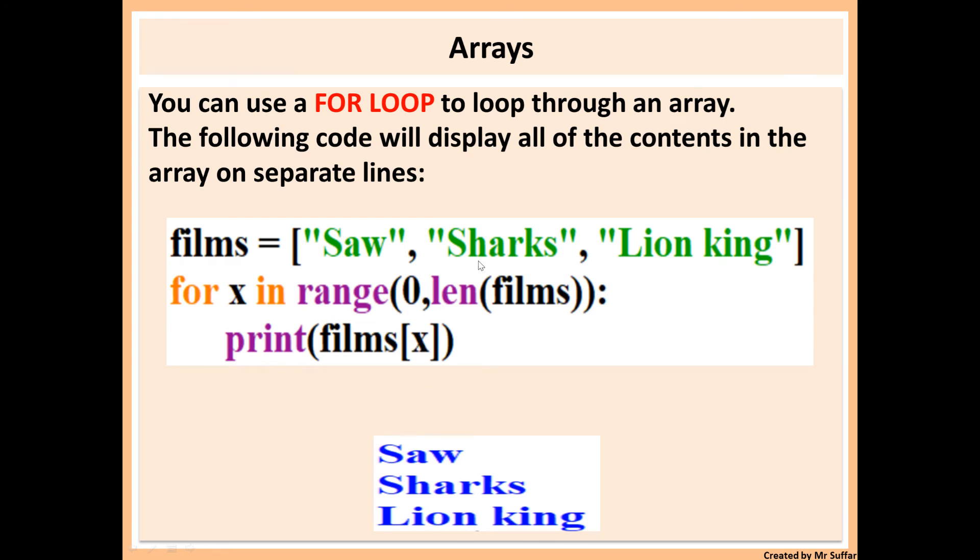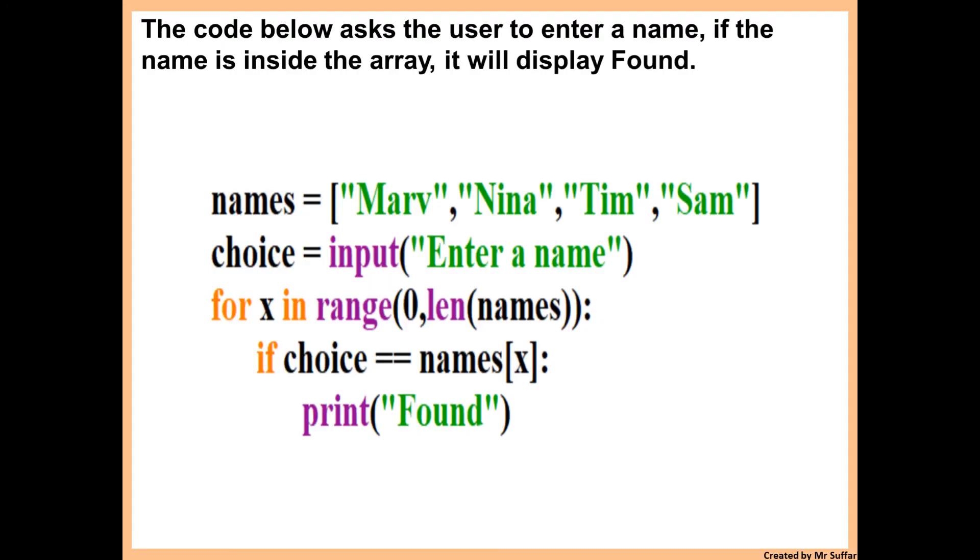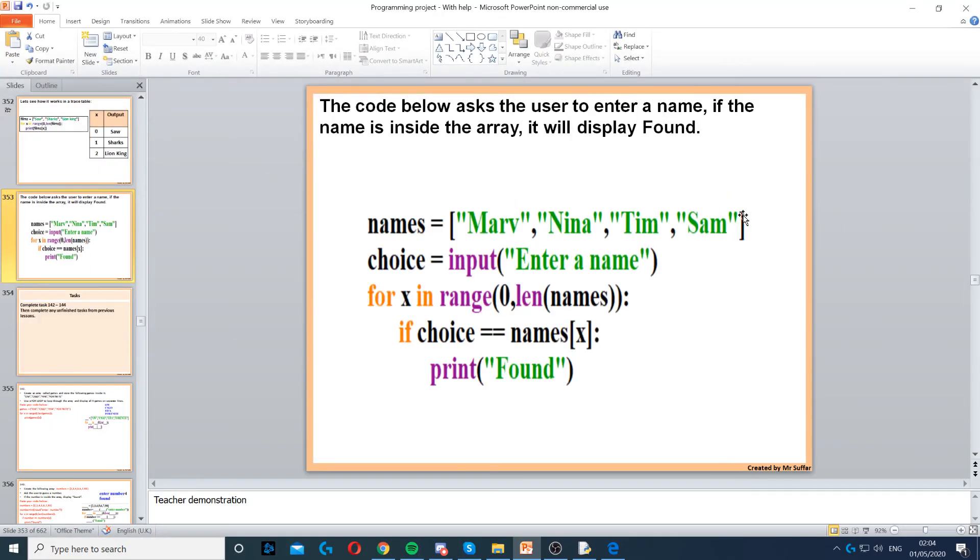Finally, we can use an if statement with that to find if the item is inside the array or not. In this case we've created an array called names, then we ask the user to enter a name. Then we loop through the array and we check if the item, if choice, if the name the user entered is equal to names[x]. The first x will be zero, so names[x] will be Mary, so we'll compare choice with Mary. If it's true we'll display Found. If it's not, we'll go to the top, increment x by one, x becomes one. If choice is equal to names[1], that's Nina, and so on. It will keep repeating until the end of the array, so it'll loop through everything in the array.